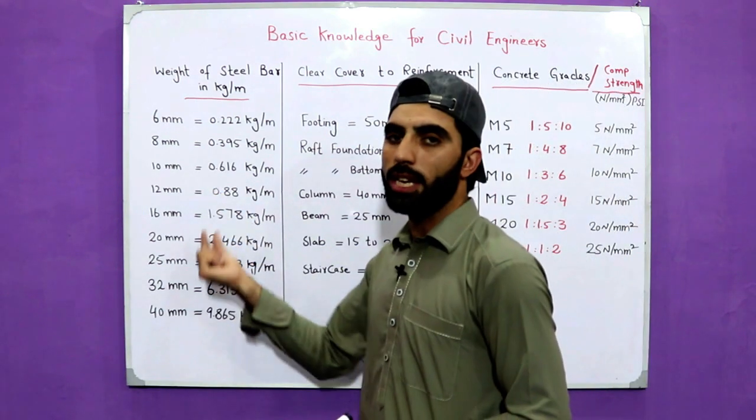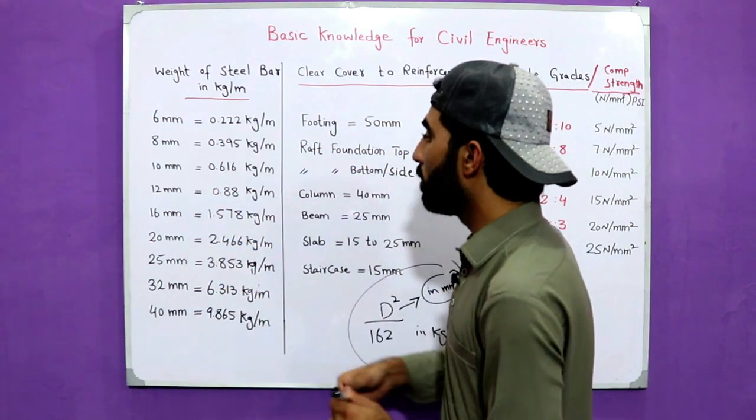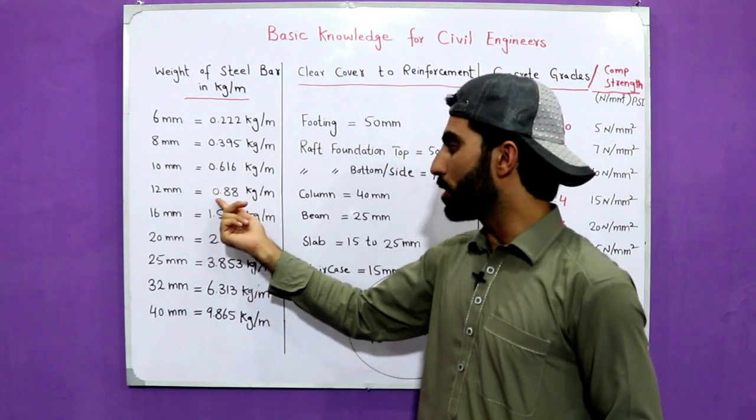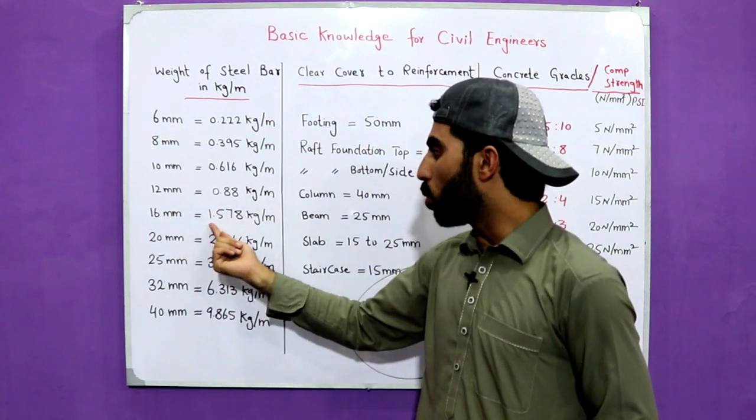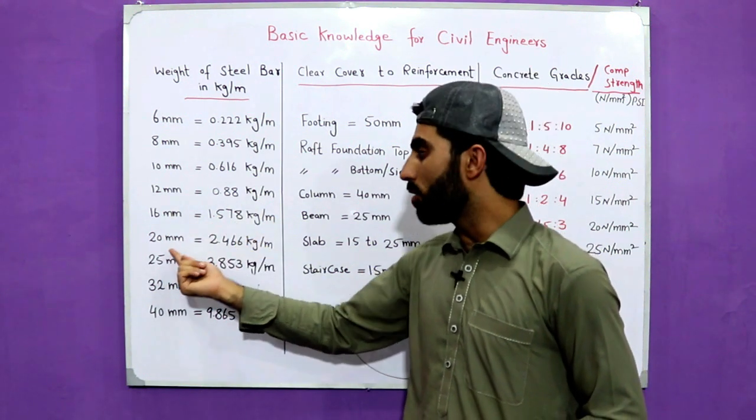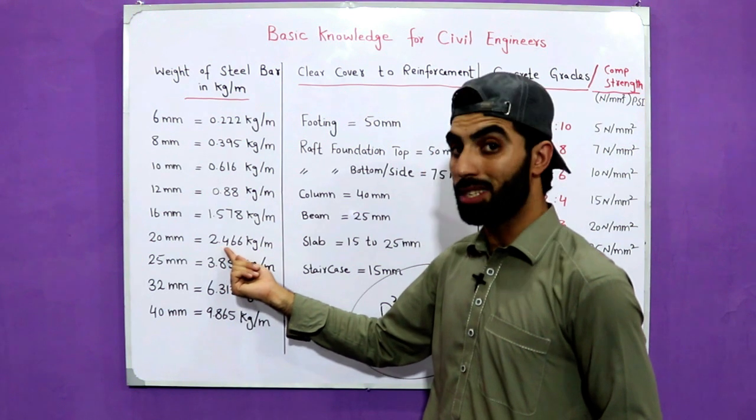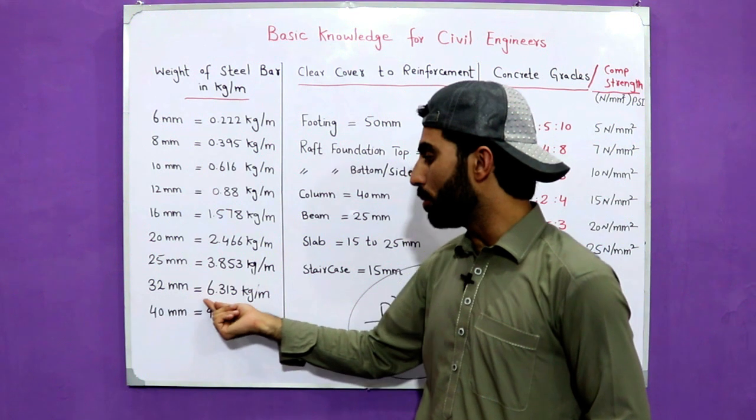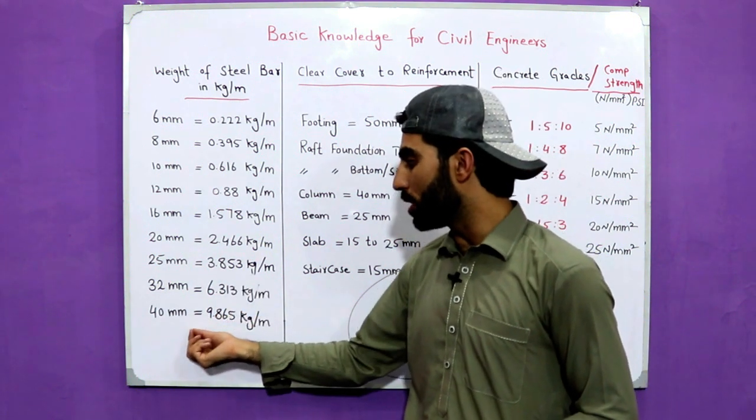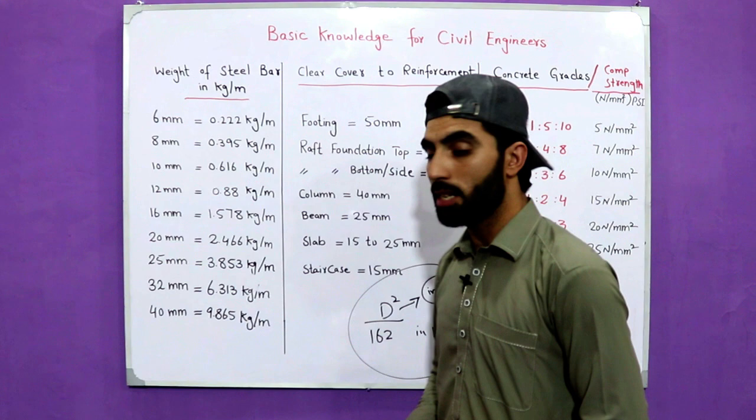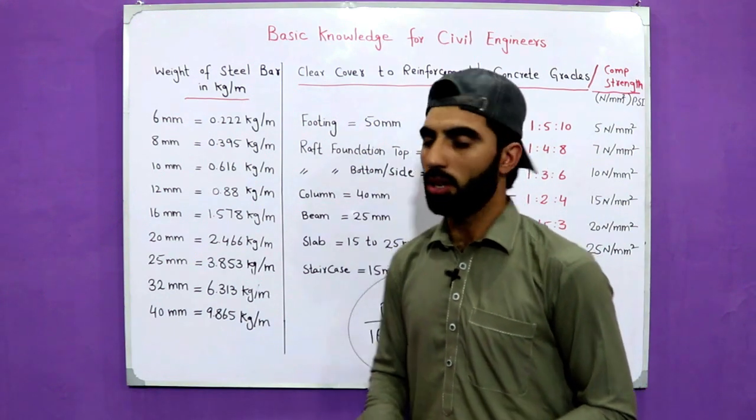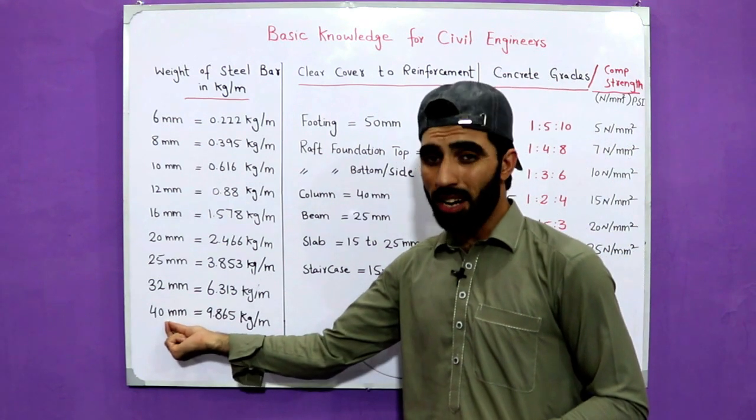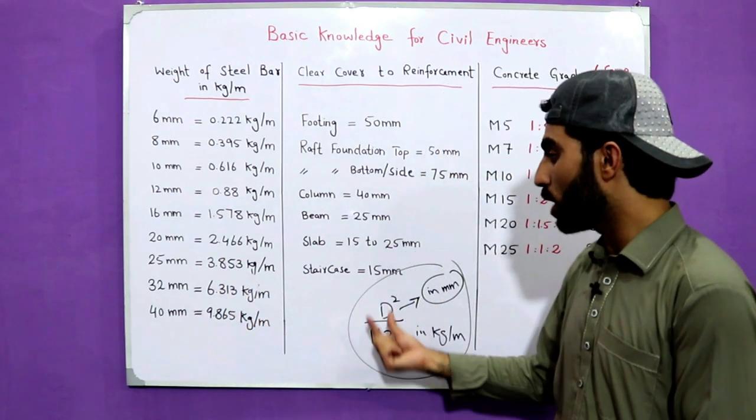For 10mm the weight is 0.616 kg per meter, for 12mm it's 0.88 kg, for 16mm it's 1.578 kg, for 20mm it's 2.466 kg, for 25mm it's 3.853 kg, for 32mm it's 6.13 kg, and for 40mm it's 9.865 kg per meter. If you have diameter more than 40mm, use the same formula.